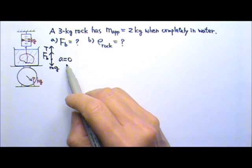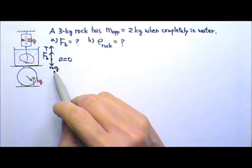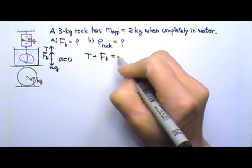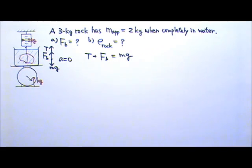Because the acceleration is zero, that means the upward force is equal to the downward force. So the tension plus the buoyant force must equal to the mg of the rock.